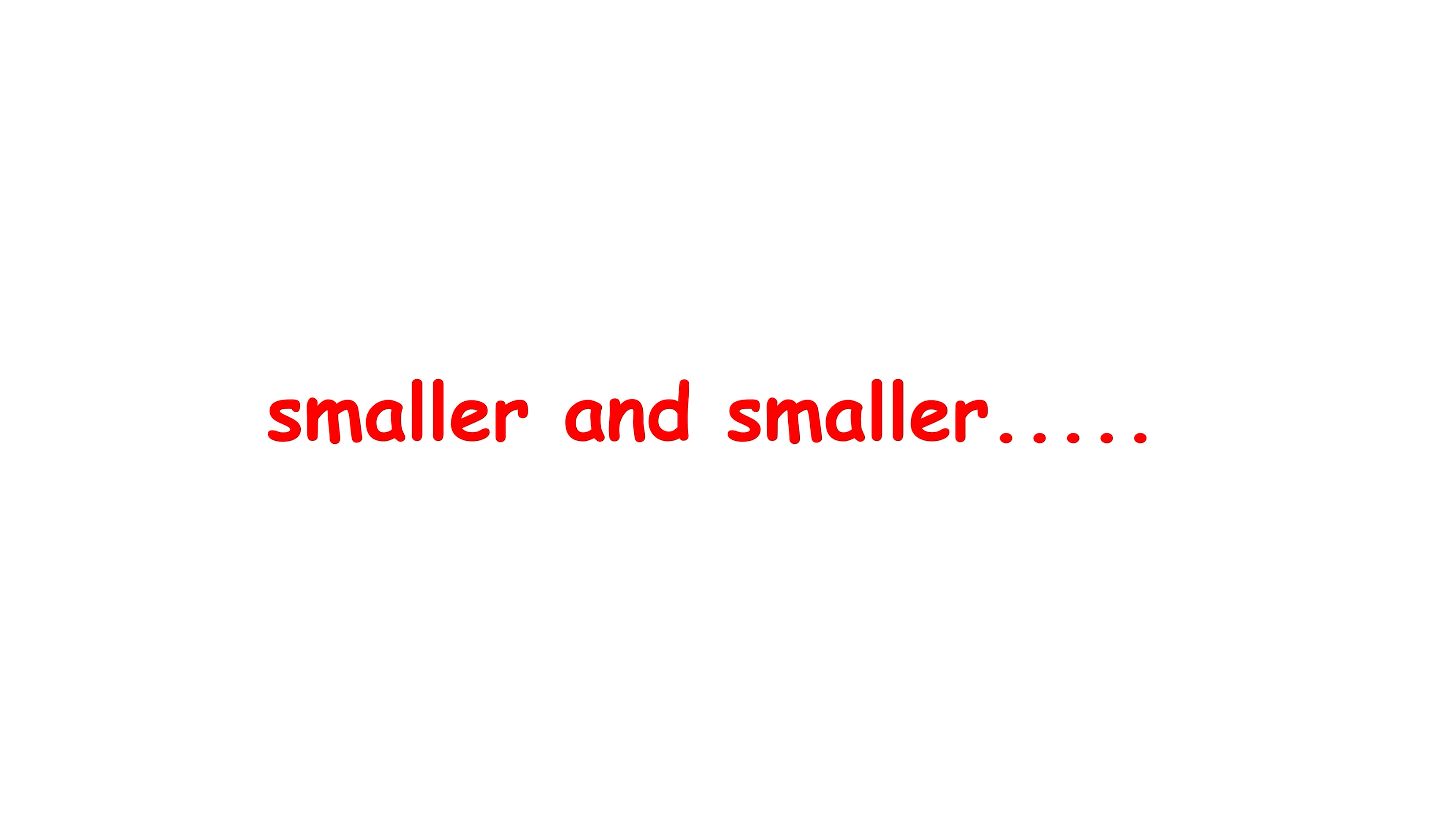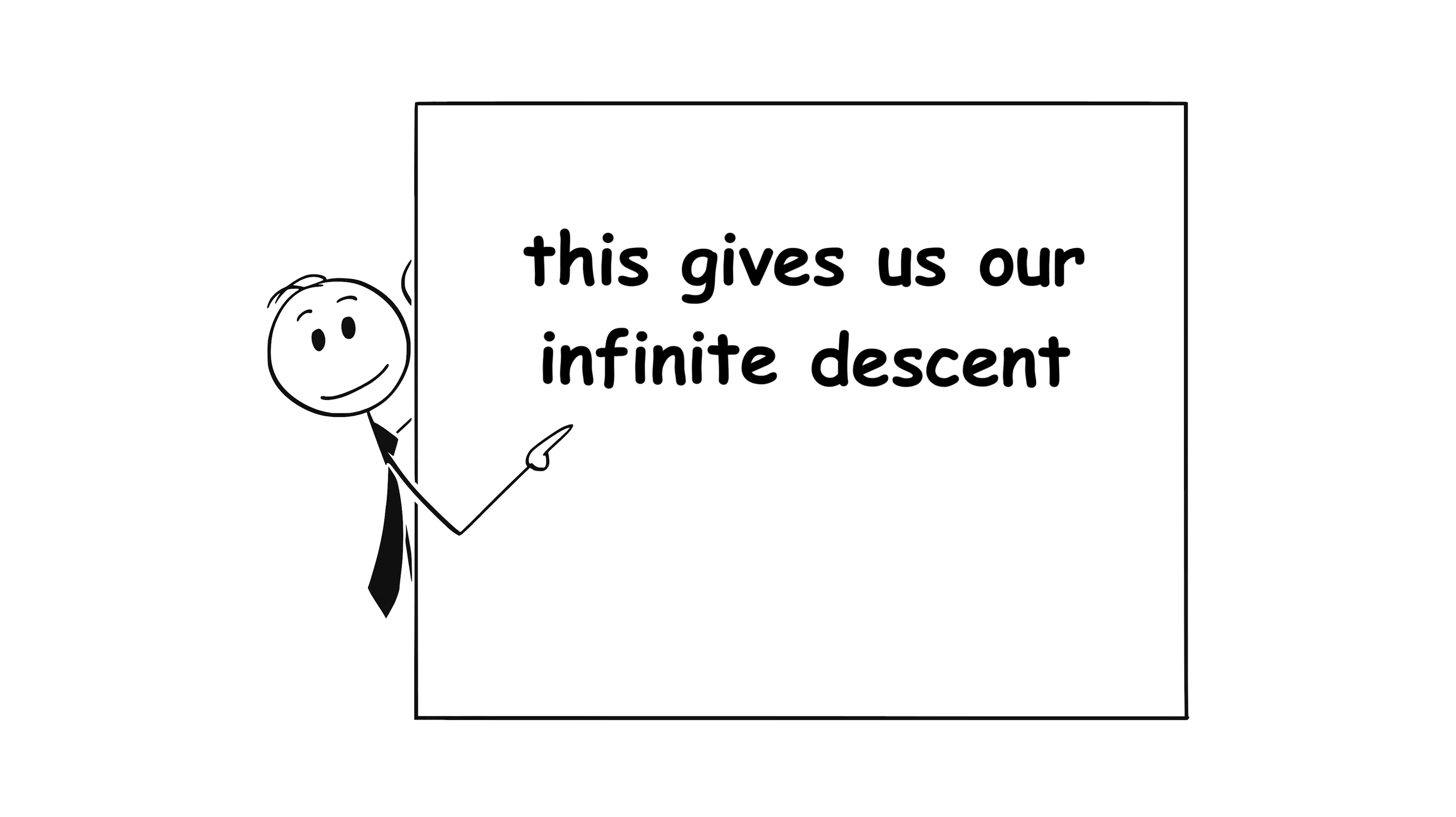Doing this over and over, the natural numbers involved will just keep getting smaller and smaller forever. However, this gives us our infinite descent, which is an impossibility, proving by contradiction that square root 2 is irrational.